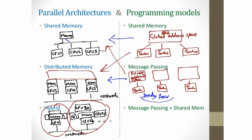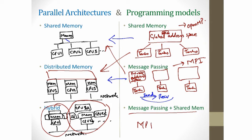On a hybrid system, you use a combination of message passing and shared memory. Typically you have different processes running on different nodes of the distributed memory architecture, and within that you use a shared memory model to use the multiple cores on the node. For shared memory, one of the most common models is OpenMP, and for message passing, one of the most common is MPI. You write your code using MPI — the message passing interface library — and in OpenMP you adhere to certain directives in order to program in parallel. On a hybrid system, you code in both MPI plus OpenMP.